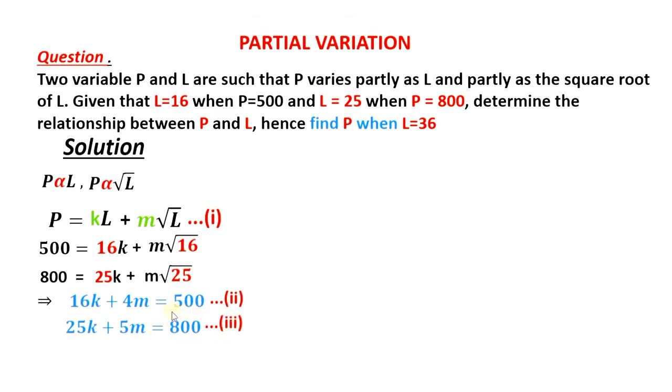Now solving by elimination method, we will have to multiply equation 2 by 5, 5 there is coefficient of M here in the third equation, and then the third equation will have to multiply by the coefficient of M here, which is 4.